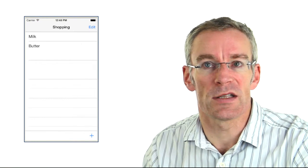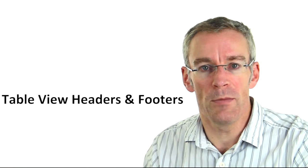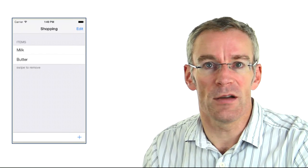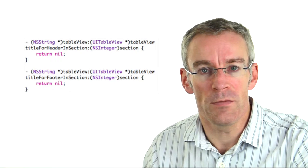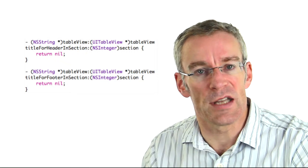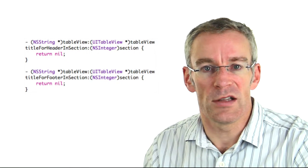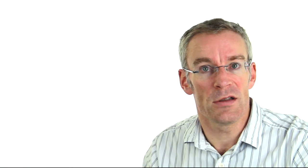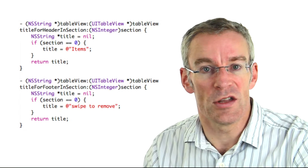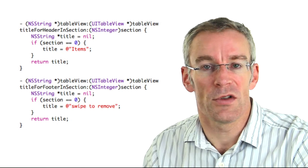Now let's think about table view headers and footers. We can display a header and footer for each section, and it's always a good idea to add these two delegate methods. The first is tableView:titleForHeaderInSection: — it passes the section we want to display the header for. The second is tableView:titleForFooterInSection:. If we return nil it doesn't display the header or footer, but if we detect the section we're in we can specify the value we want and return it to display the correct title.